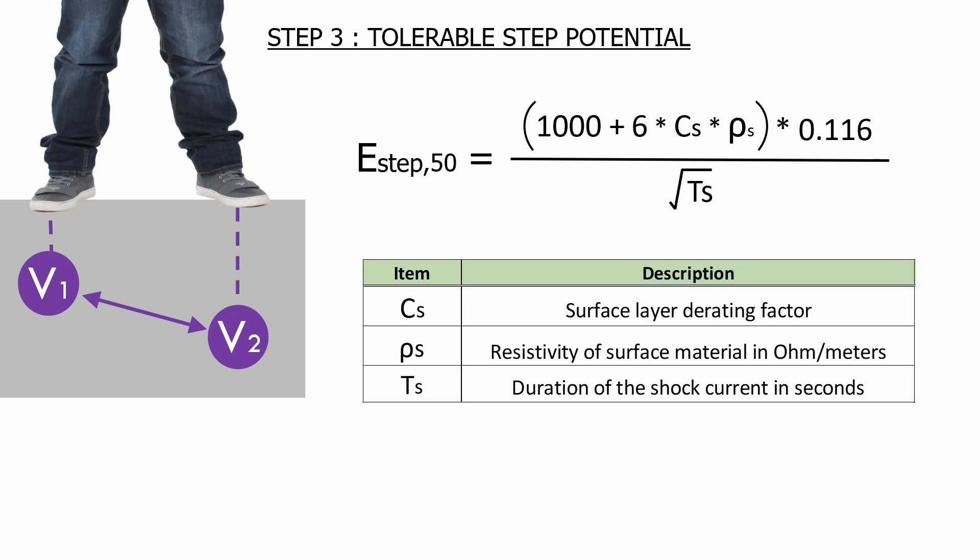What happens if we have no surface material? Well, CS becomes 1, as per the previous lecture. The surface resistivity value, ρs, will now become the resistivity of the soil, which will have a lot lower value, and therefore the tolerable step voltage will drop considerably.